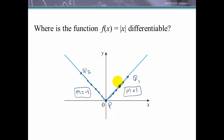For any other point on the right branch, the slopes of secant lines from the right-hand side or left-hand side both equal 1, and as h approaches 0 they equal 1. Similarly, for a point on the left branch, approaching from either side gives a limit of negative 1 — the left-hand limit equals the right-hand limit, so the derivative exists there. This function is differentiable everywhere except at x equals 0.